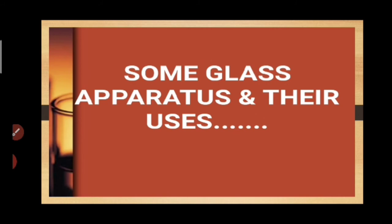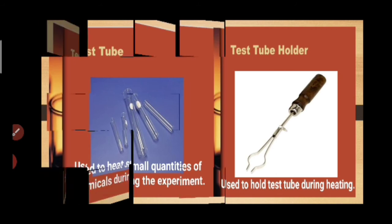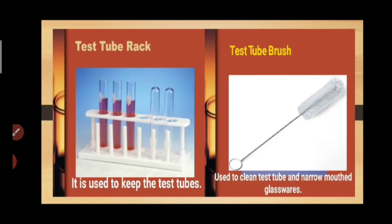Now, some glass apparatus and their uses. The first is the test tube — used to heat small quantities of chemicals during experiments. Second, the test tube holder — used to hold the test tube during experiments. Third, the test tube rack — where test tubes are kept during or after experiments. Fourth, the test tube brush — used to clean not only test tubes but all narrow-mouth glassware.